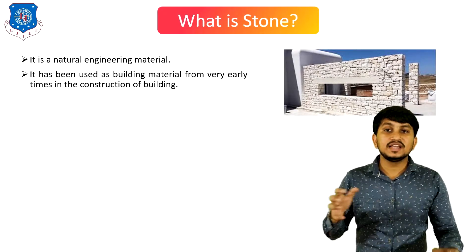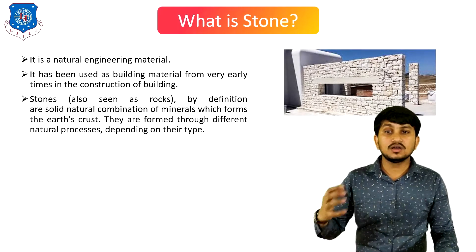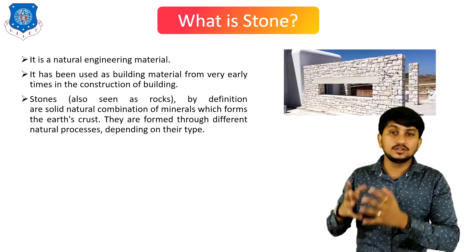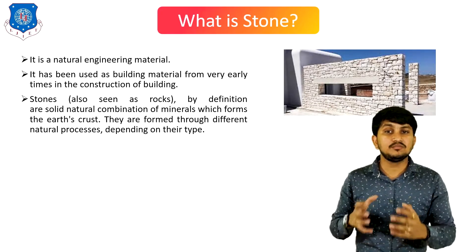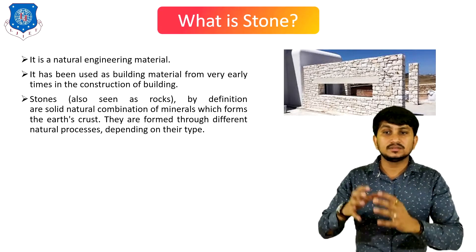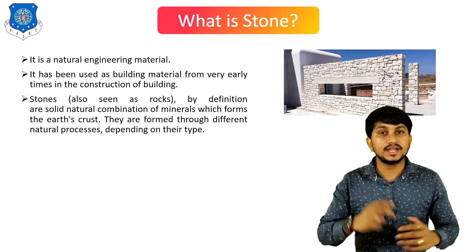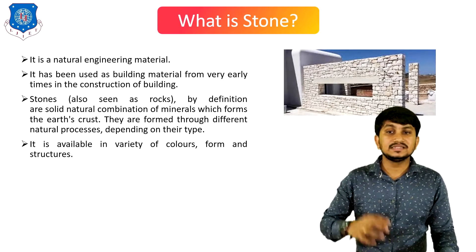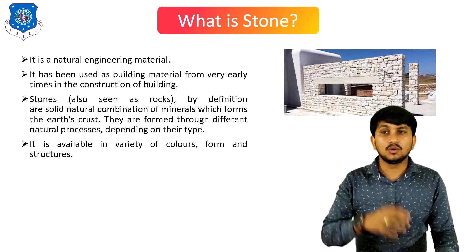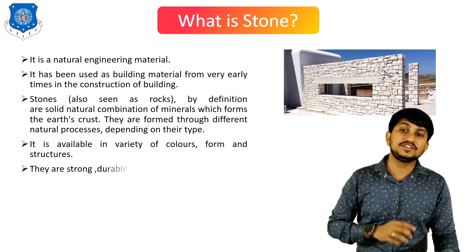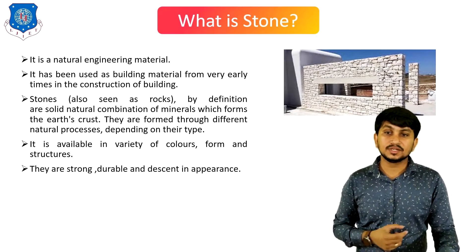Stone is a natural engineering material. It has been used as a building material from very early times. Stones, also seen as rocks, are by definition solid natural combinations of minerals which form the earth's crust. They are formed through different natural processes. It is available in a variety of colors, forms, and structures. It is the oldest material used for civil engineering — strong, durable, and decent in appearance.